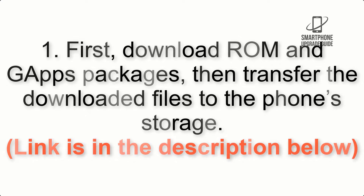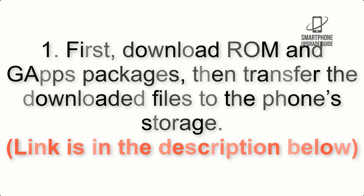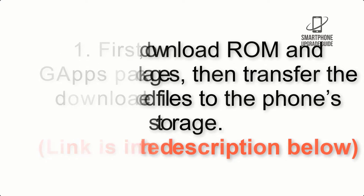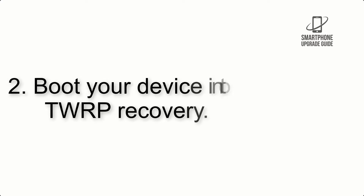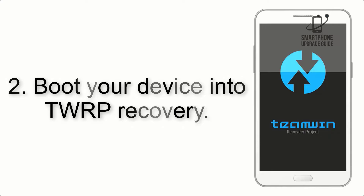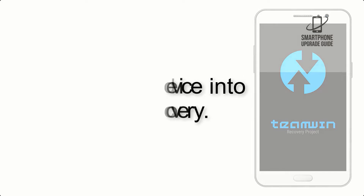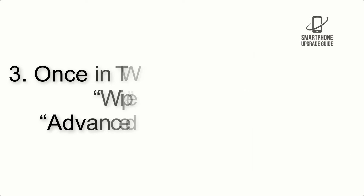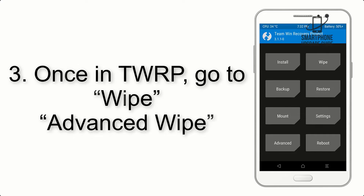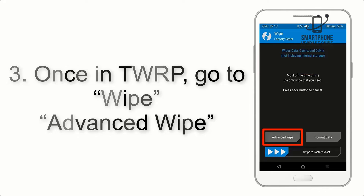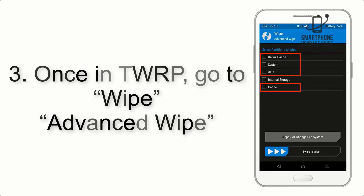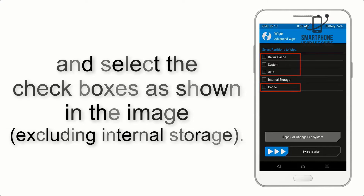Transfer the downloaded files to the phone storage — link is in the description below. Step 2: boot your device into TWRP recovery. Once in TWRP, click on Wipe, then Advanced Wipe, and select the checkboxes as shown in the image, excluding internal storage.